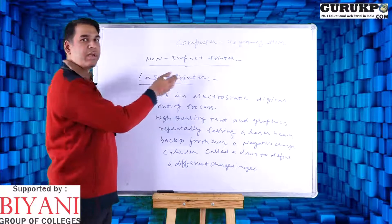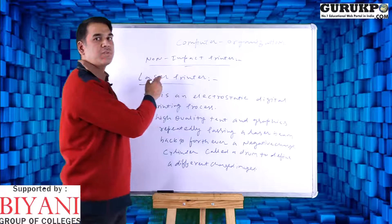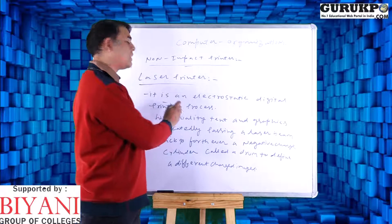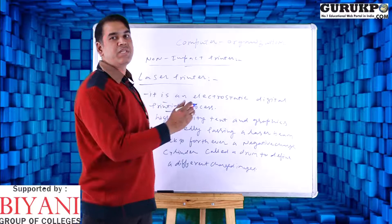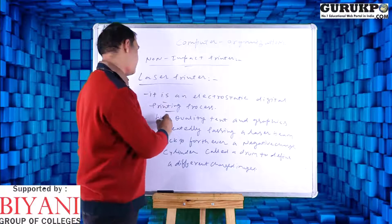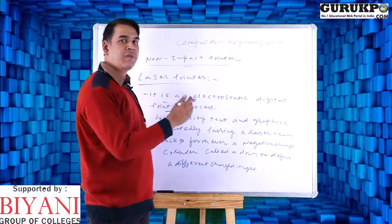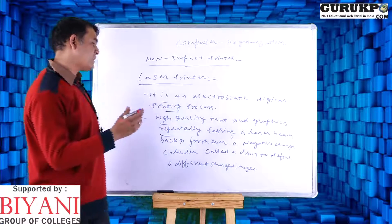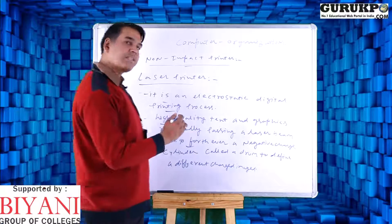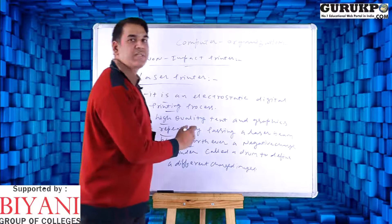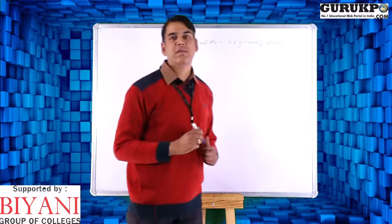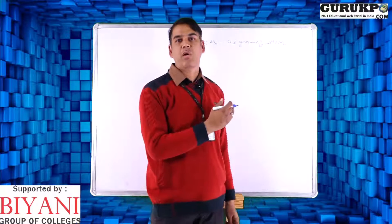Let us have another discussion on non-impact printers. We have another type which is called laser printer. It is an electrostatic digital printing process. Laser printer is the most useful technology we are using in particular printers. It produces very high quality text and graphics. Repetitively, we can say that it works by passing a laser beam back and forth over a negatively charged cylinder called a drum, which defines a different charge image. This is the basic functionality of the laser printer and this concludes our basic discussion on the topic of printers.